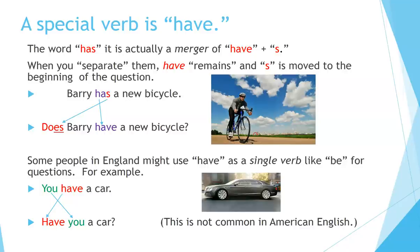A special verb is 'have.' The word 'has' is actually a merger of 'have' plus 'es.' When you separate them, 'have' remains and the 'es' is moved to the beginning of the question. For example, 'Barry has a new bicycle' — we start with 'do,' change it to 'does': 'Does Barry have a new bicycle?' Some people in England might use 'have' as a single verb like 'be' for certain questions, saying 'Have you a car?' This is not common in American English.